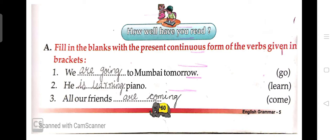Second sentence: 'He is learning piano.' Here 'he' is a singular subject, so we use 'is.' In present continuous tense we use three helping verbs: 'am' with 'I,' 'is' with a singular subject, and 'are' with a plural subject.